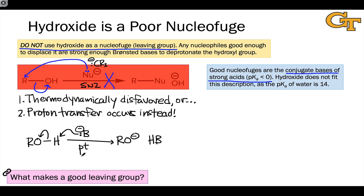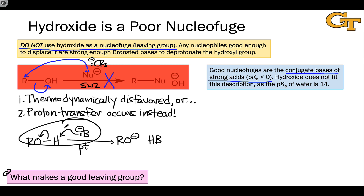So rather than doing the SN2 step that we sort of wanted, we're going to get proton transfer instead. Proton transfer is the intrinsically most rapid elementary step, so it should be one of the first that you consider in the context of any organic reaction. The punchline is that any Lewis base strong enough to displace hydroxide in a thermodynamic sense will deprotonate the hydroxyl group at a much faster rate than it will engage in SN2 at the carbon linked to the hydroxyl group. Moral of the story: do not use hydroxide as a leaving group.